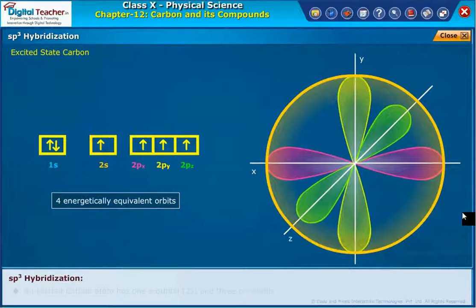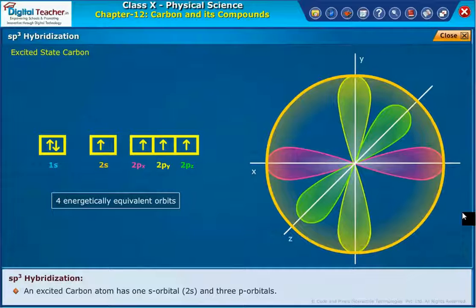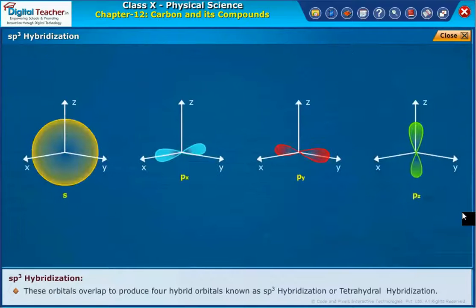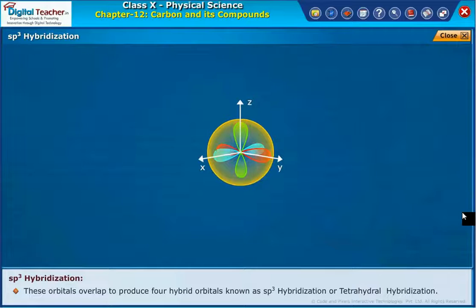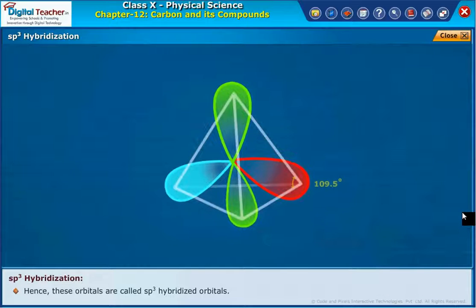SP3 hybridization. An excited carbon atom has one S orbital, 2s and three P orbitals. These orbitals overlap to produce four hybrid orbitals known as SP3 hybridization or tetrahedral hybridization. Hence, these orbitals are called SP3 hybridized orbitals.